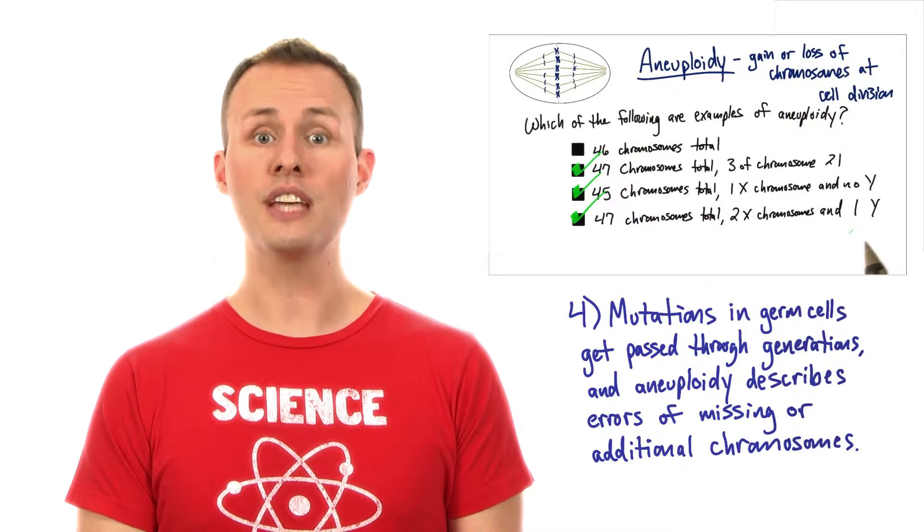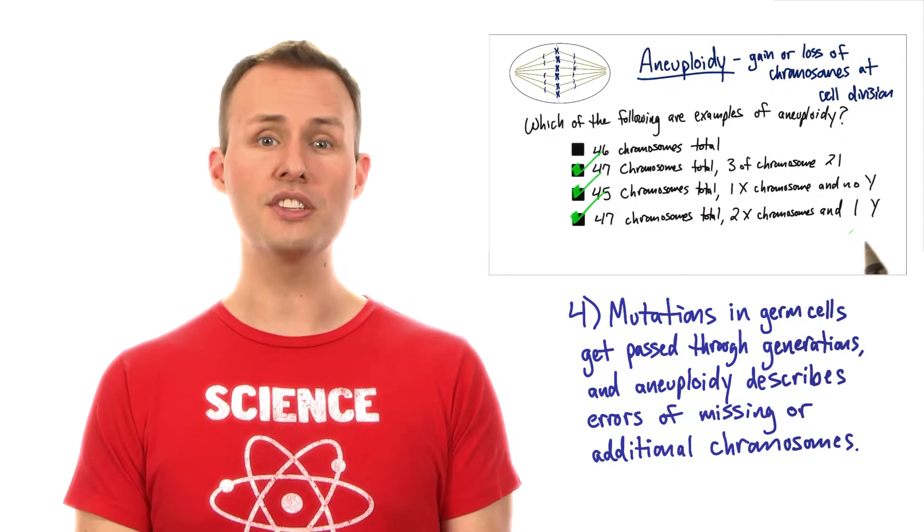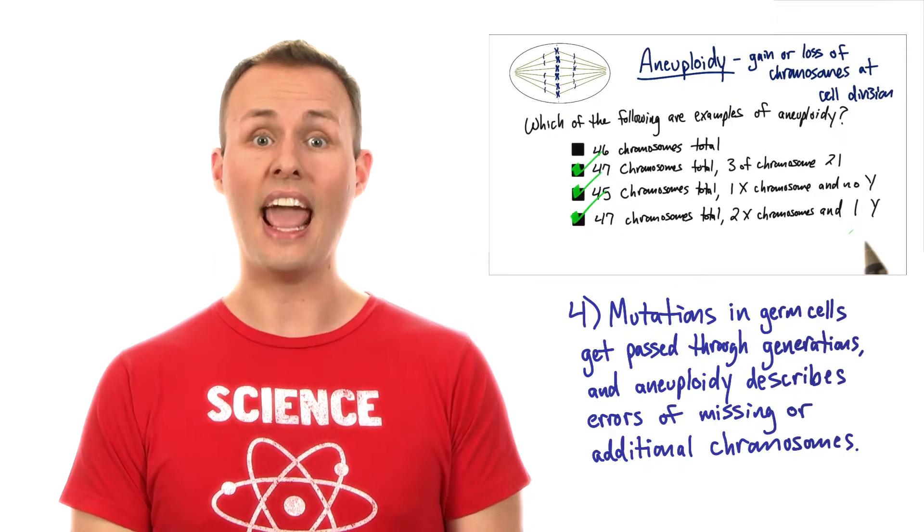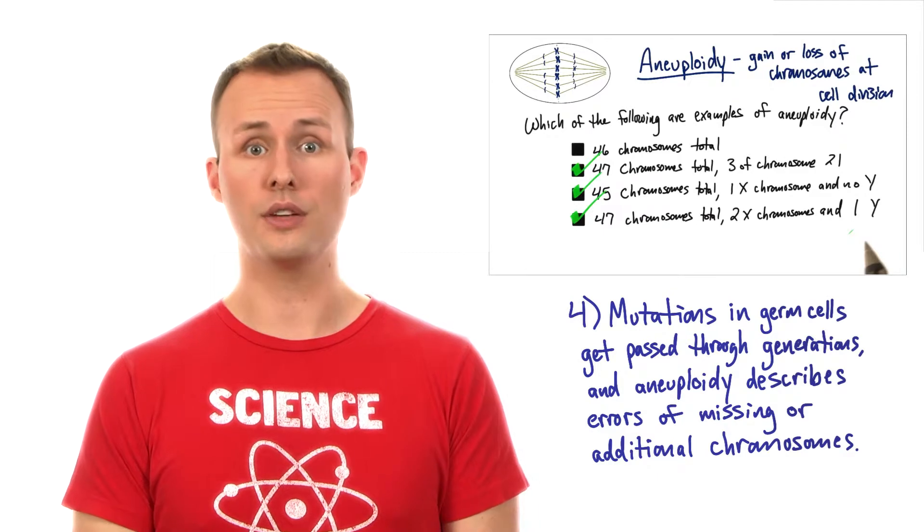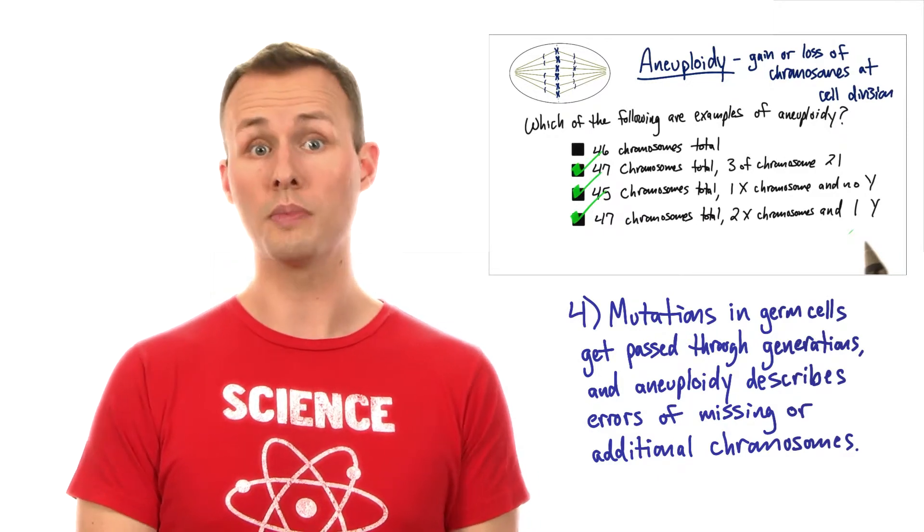Point four, mutations that occur in germ cells are the mutations that get passed down to the next generation, and aneuploidy describes problems in cell division that result in additional or missing chromosomes.